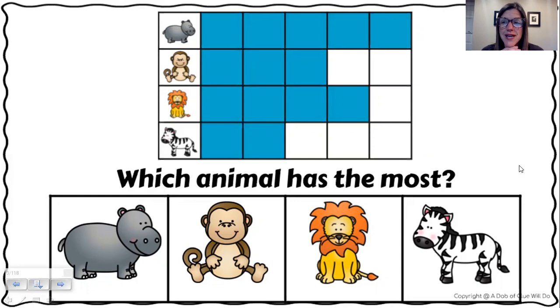If you said hippopotamus, you are right. I can tell just by looking at it, but let me prove it because all good mathematicians double check. Hippopotamus has one, two, three, four, five bars colored in.